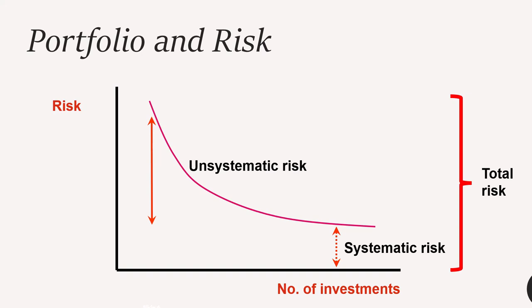This means that investors should only be rewarded for risks they cannot diversify away through holding a portfolio. They therefore need to be compensated only for systematic risk, and it is systematic risk that is used in the Capital Asset Pricing Model to calculate the cost of equity.